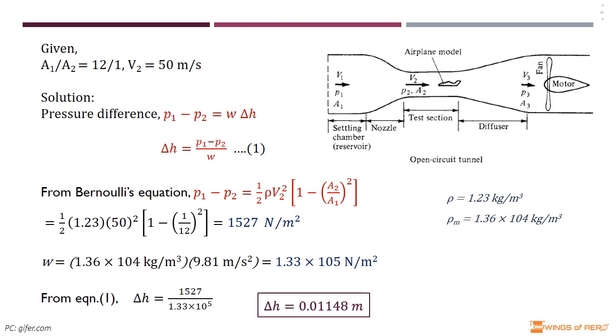Where ρ is the density of air flow at standard sea level, ρ equals 1.23 kg/m³, and V₂ is the velocity which is already given in the question.